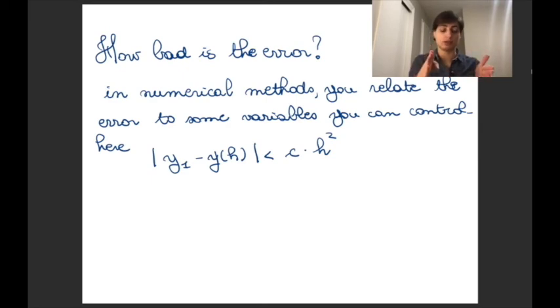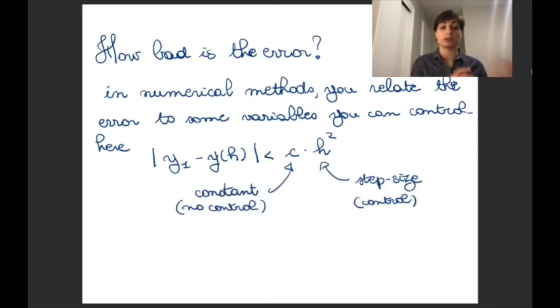So at step one, so one step away from the initial condition, the error that you're making is a constant times the step size squared. So what is the part we can control and what is the part we cannot control? The constant is not something we can control. The constant comes from how messy and complicated f is. And we have no way of knowing it nor no way of controlling it. But on the other hand, h² is the step size. So we have full control to choose it as small as we want or as big as we want. So there is where our control lies. We can control the error that our computer is making while computing the approximation of the solution of an ODE by controlling the step size.